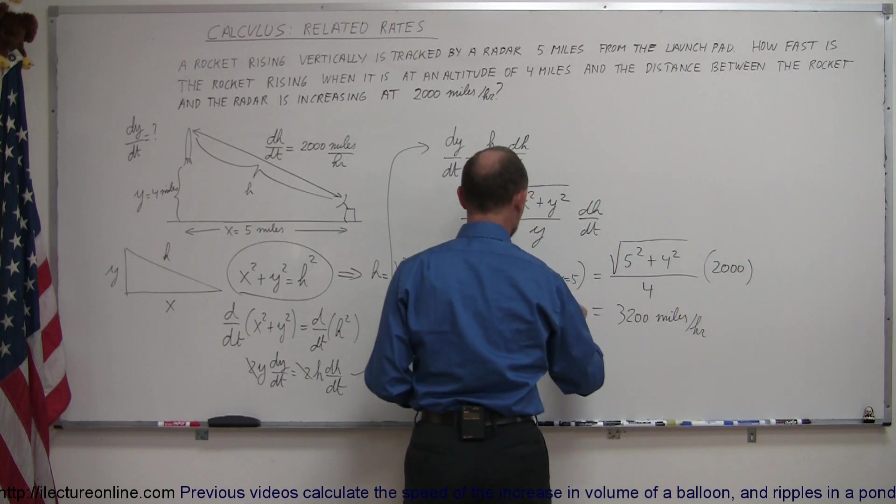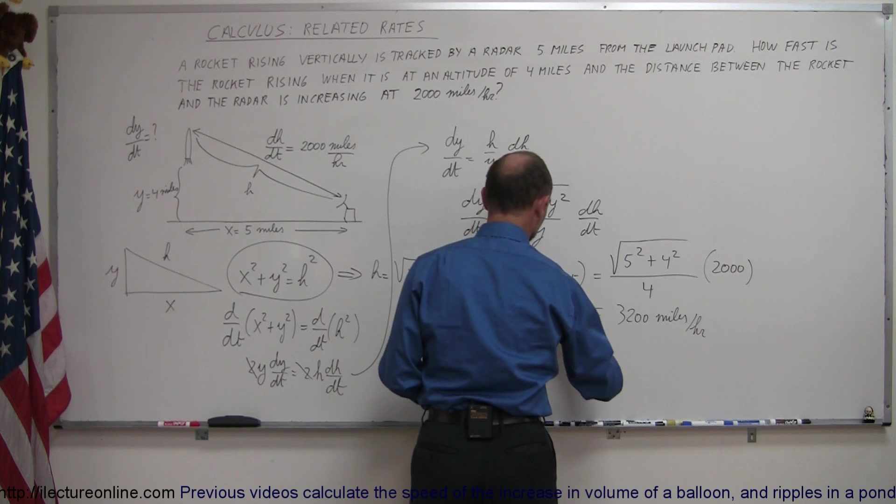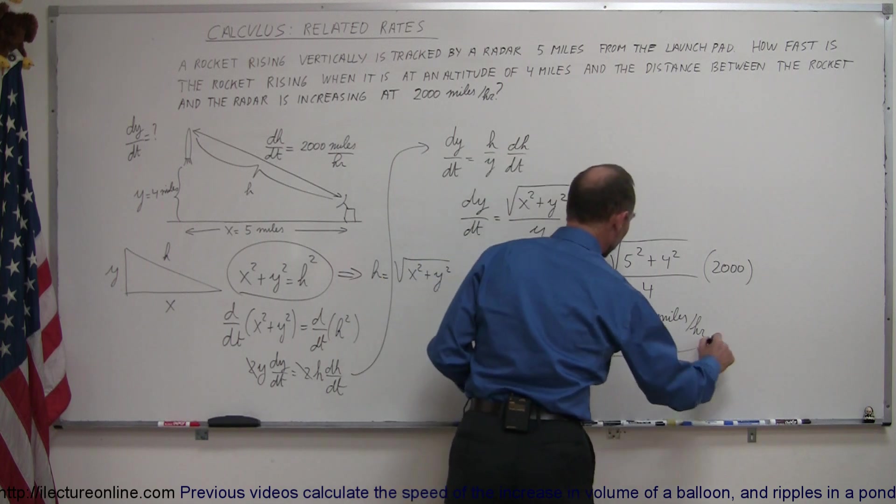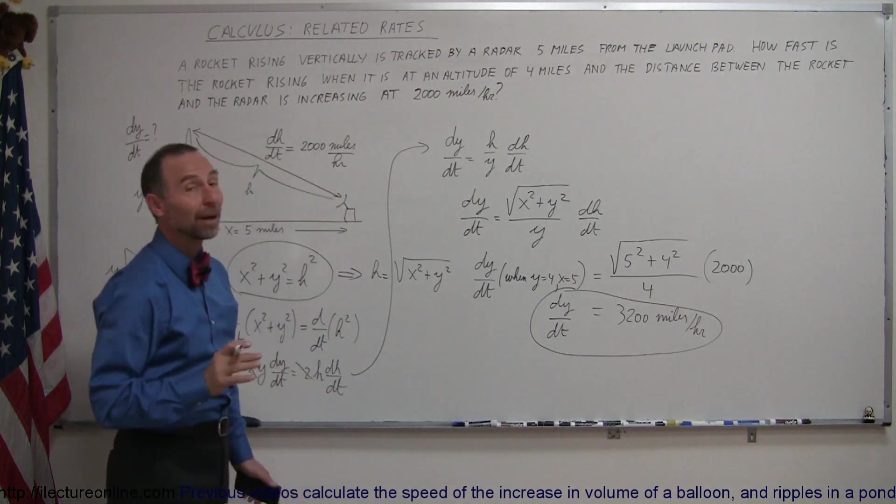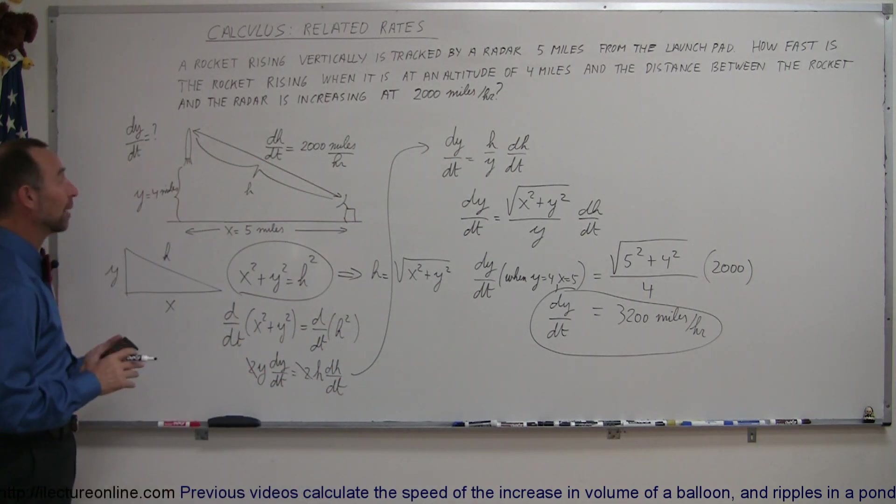So we know that the dy dt, at the time they wanted us to find it, is equal to 3,200 miles per hour. So that's kind of an interesting problem.